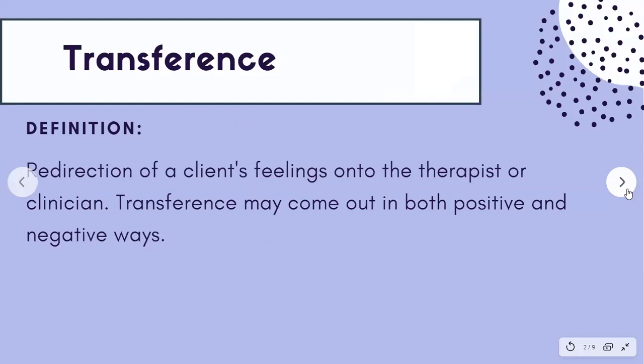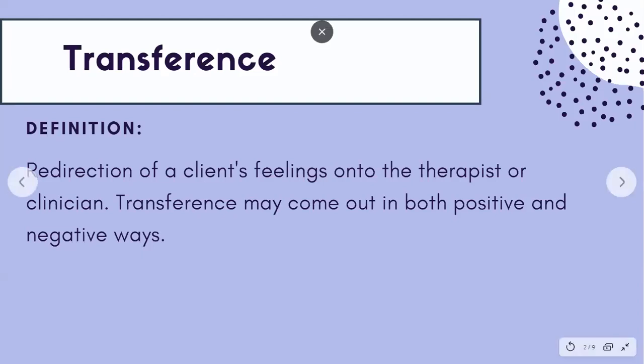Transference. The definition of transference is redirection of a client's feelings onto the therapist or clinician. Transference in clinical work is inevitable — it is bound to happen — and it may come out in both positive and negative ways. It's important to note that if this does occur, you can explore it with the client, dig a little bit deeper, and unpack what's really going on.